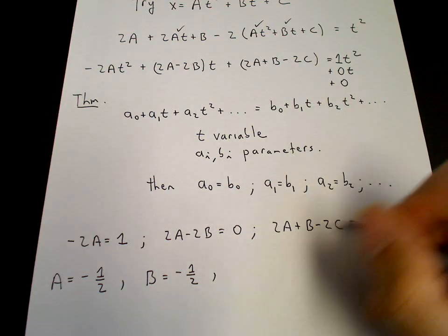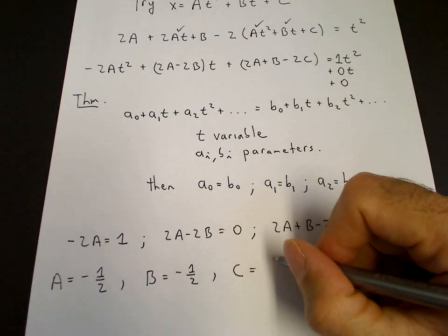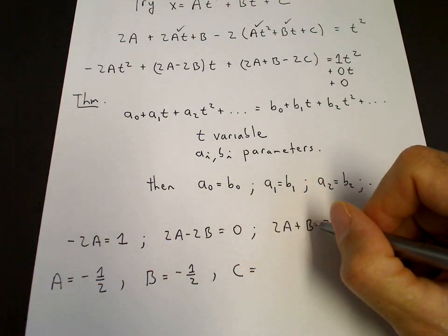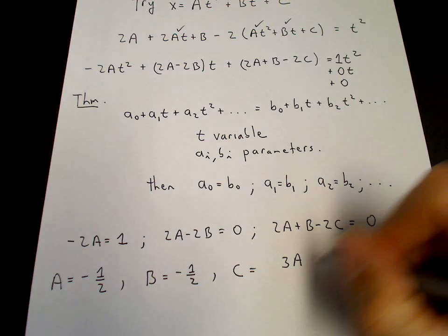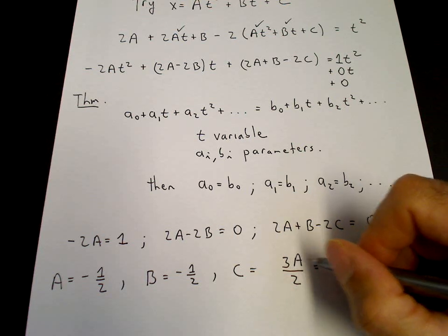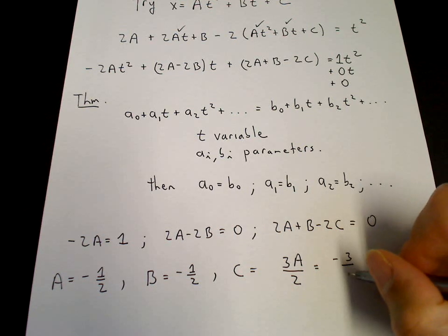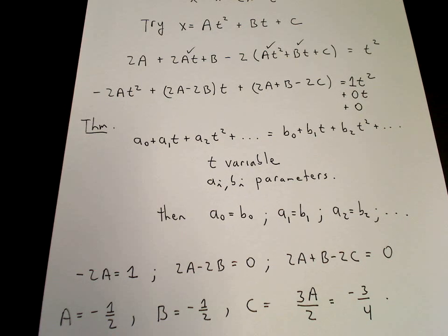And C, pulling the 2C on the right, dividing by 2, is 2A plus B. B equals A, so it's 3A divided by 2. A is minus a half, so it's minus 3 quarters.